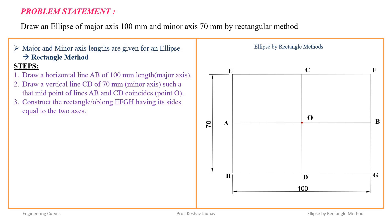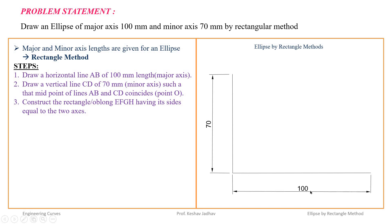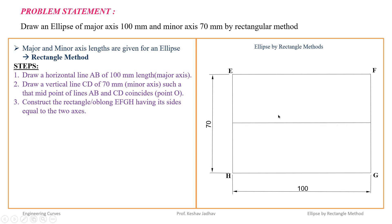We can also draw this rectangle in a different way. First draw a vertical line of length 70 mm, then perpendicular to this draw a horizontal line of length equal to the major axis. Complete rectangle EFGH. Then from the midpoint of line EH draw horizontal line AB, and from the midpoint of line EF draw vertical line CD. The intersection of AB and CD is O, which is the center of the ellipse.